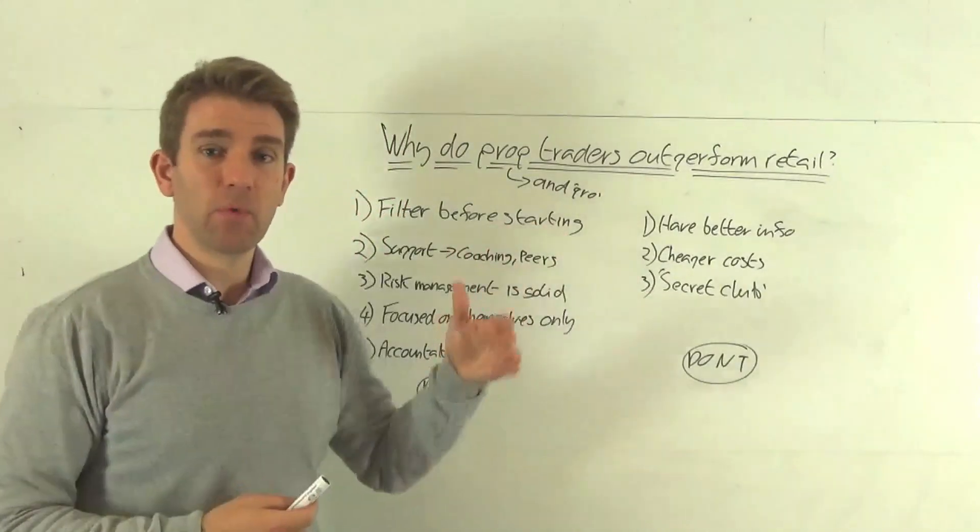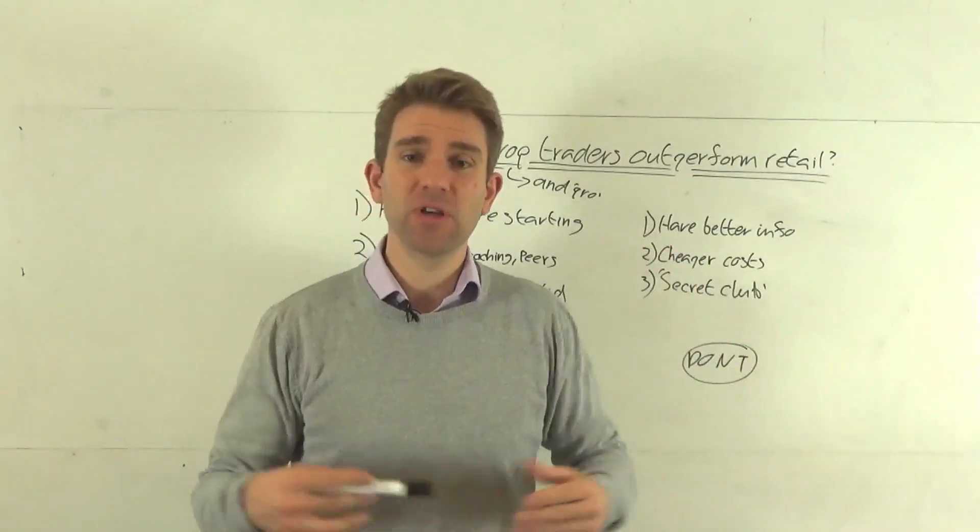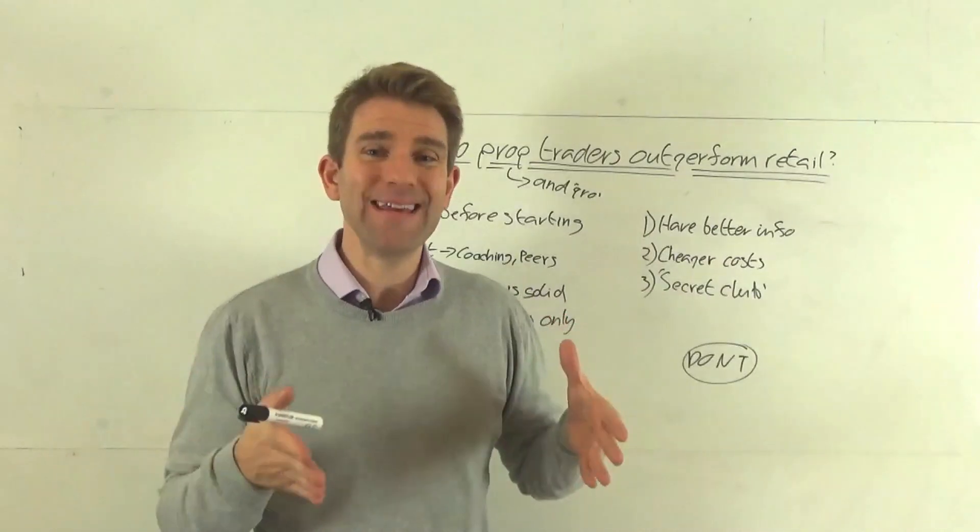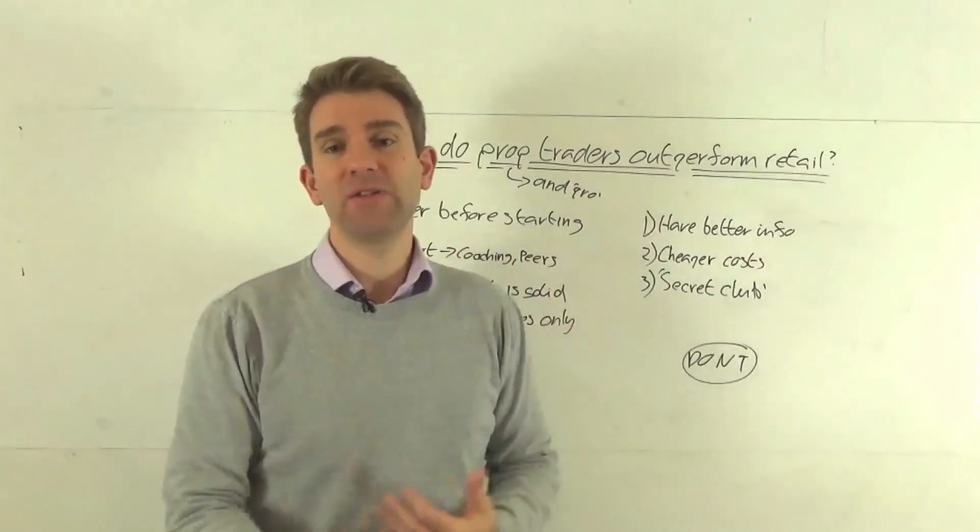There's a pool of people and they will pick who they think is most likely to succeed when trading the company's money. So already there's a filter, whereas retail, anyone with a few hundred bucks, a few hundred euros, a few hundred pounds can start to trade. So already you've narrowed down the field of people who are more likely to succeed.